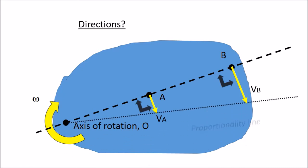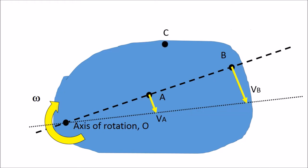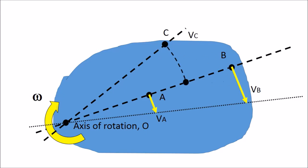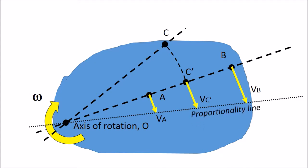We can very well understand that we can draw a proportionality line. With regards to another point C, the magnitude of the velocity of C is equal to omega multiplied by OC, and it is also perpendicular to the line that joins O and C. We can also draw this arc and determine the location of C prime. The velocity vector of C prime is proportional to the distance from O to C prime, and it is also perpendicular to the line that joins O to C prime.